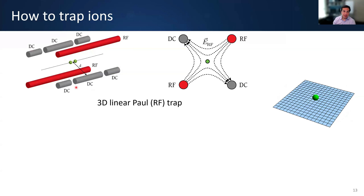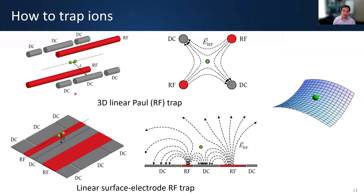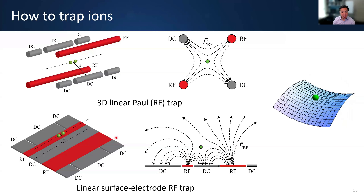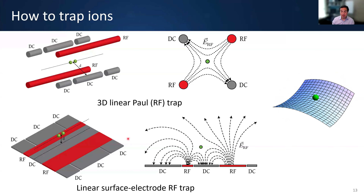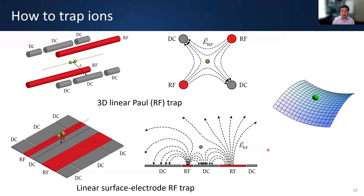Historically this kind of trap was made in a machine shop, but you can also unfold these electrodes down onto a plane. On the plane you still have the quadrupole and the saddle point, though with slightly lower symmetry. This allows you to trap ions where the electrodes are made on a chip — microfabricated in a clean room — enabling larger scale traps.